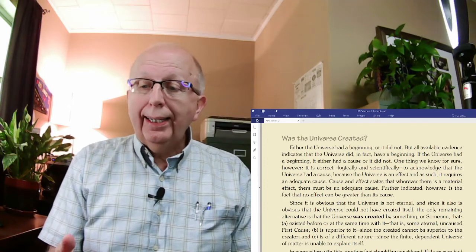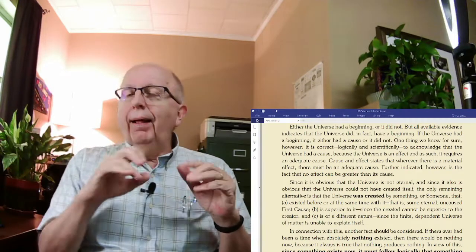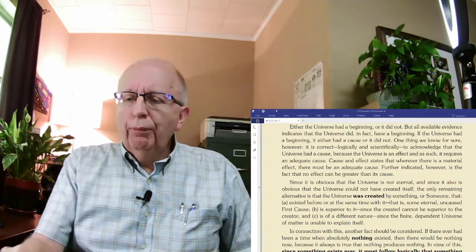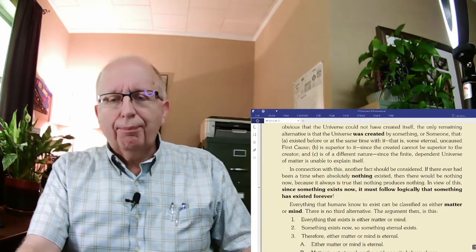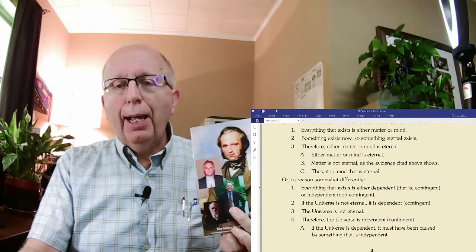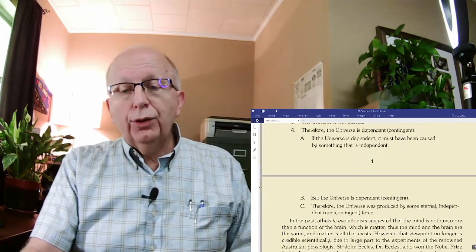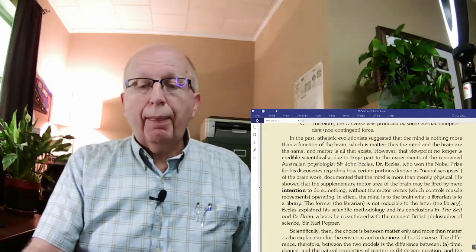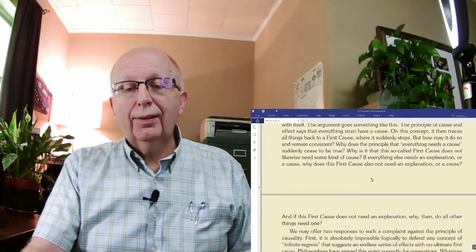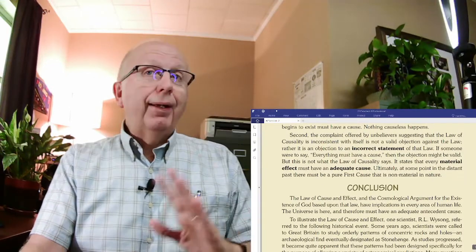Since it is obvious that the universe is not eternal and since it is also obvious that the universe could not have created itself, the only remaining alternative is that the universe was created by something or someone that existed before or at the same time with it, that is, some eternal uncaused first cause. And it is superior to it since the created cannot be superior to the creator and is of a different nature since the finite dependent universe of matter is unable to explain itself. So this is just a sample of this lesson.